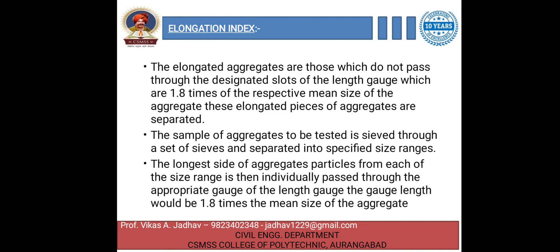The aggregate which has passed through a sieve and been retained on the next — as written on the sieve — is then passed lengthwise through the appropriate length gauge. The gauge length is 1.8 times the mean size of the aggregate, and we pass each size fraction through its corresponding gauge lengthwise.